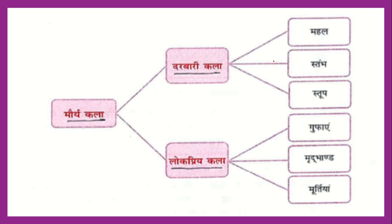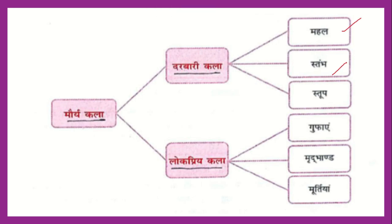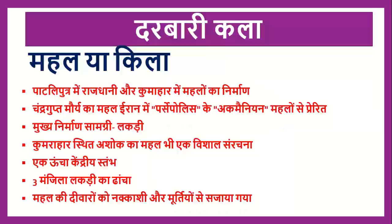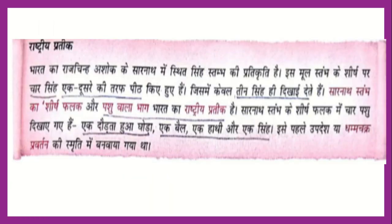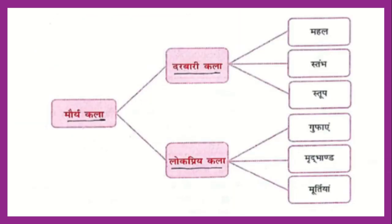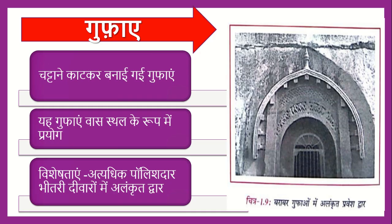Now we have read this topic in Darbari Kala and completed these topics. Today, we will cover three things: Guffa, Mridband, and Murti. These are the three relationships we will study. Let's first talk about Guffa — the caves of Maurya Kala — and see how the Guffa was made.